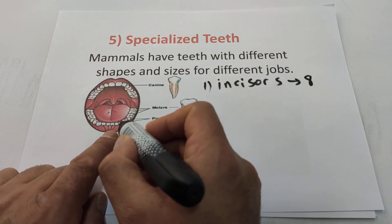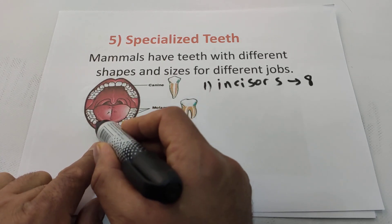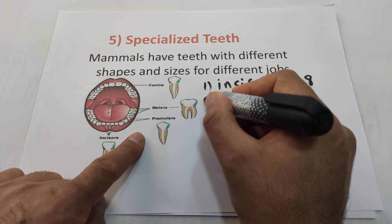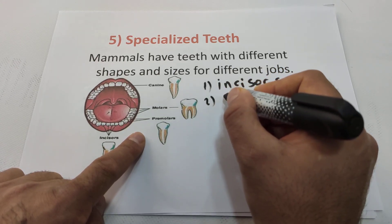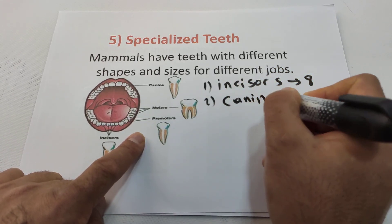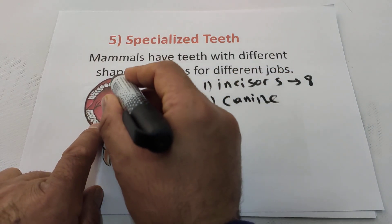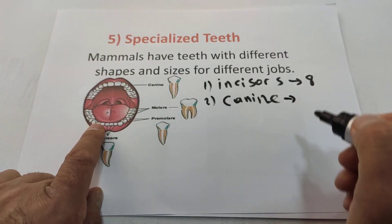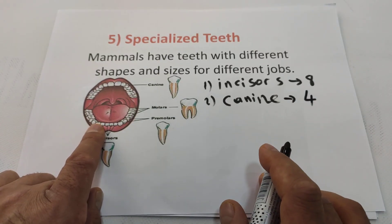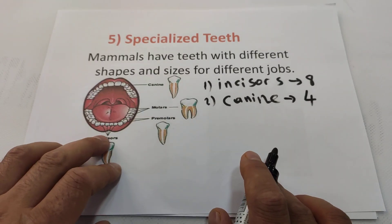The second kind of teeth are called canines. There are two canines up and two canines down, for a total of four canine teeth. Especially lions have very strong canine teeth.